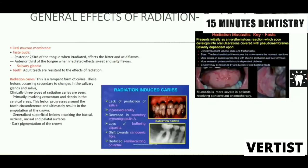General effects of radiation on the oral cavity include: the oral mucous membrane is affected, taste buds are affected, and salivary glands are affected — causing changes in the consistency and content of saliva, which leads to radiation caries. An adult tooth is itself resistant to the direct effects of radiation, but because it is surrounded by altered saliva, radiation caries develop. These come in three types: lesions involving cementum and dentine, generalized superficial lesions, and dark pigmentation. These effects occur mainly in patients receiving therapeutic radiation, not from routine diagnostic radiographs.